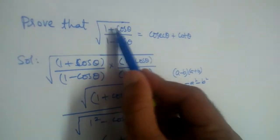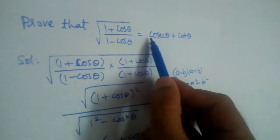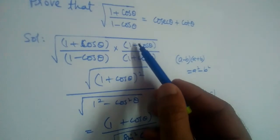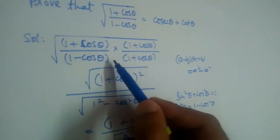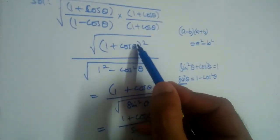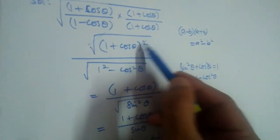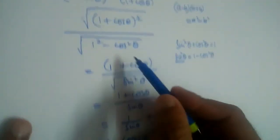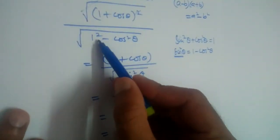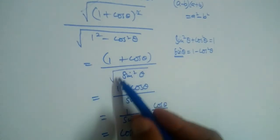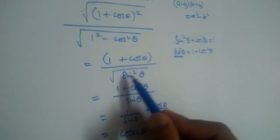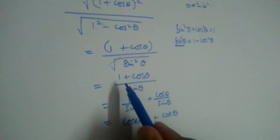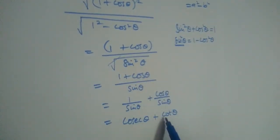So this will be cosecant theta plus cot theta. This is what we needed to prove — prove that root of 1 plus cos divided by 1 minus cos is equal to cosecant plus cot. We multiplied numerator and denominator by 1 plus cos, giving root of 1 plus cos whole squared, with root and square cancelling. In the denominator, 1 minus cos squared equals sin squared, so root of sin squared is sin. Therefore 1 by sin plus cos by sin is cosecant plus cot.